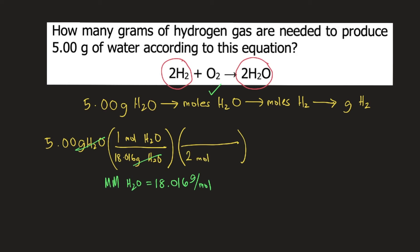You put that into your conversion, 2 moles of water at the bottom and on top 2 moles of hydrogen gas. So moles of water will cancel. Now you have moles of hydrogen gas.